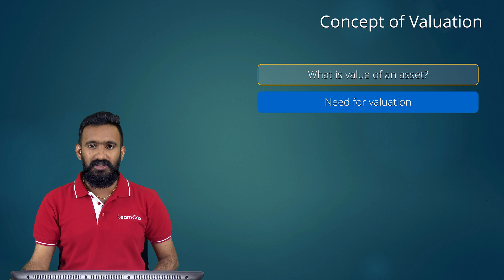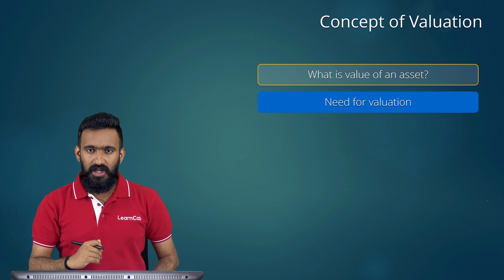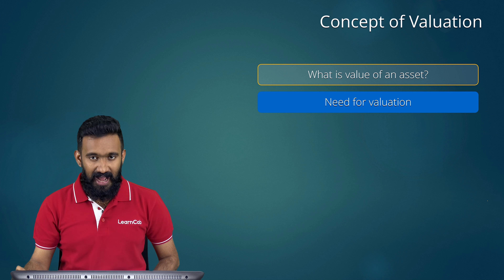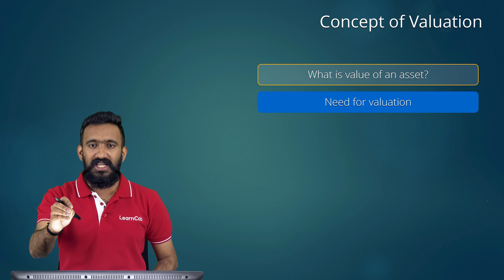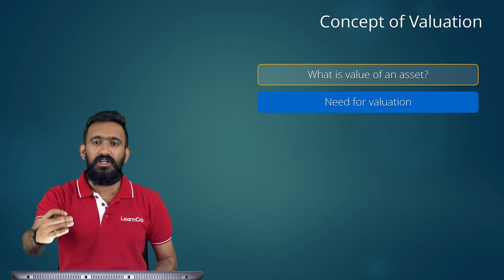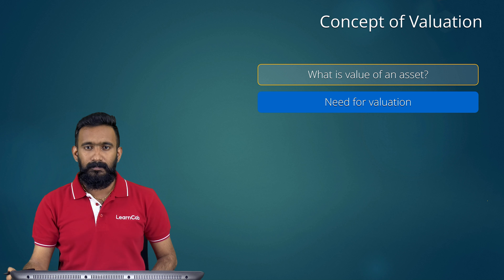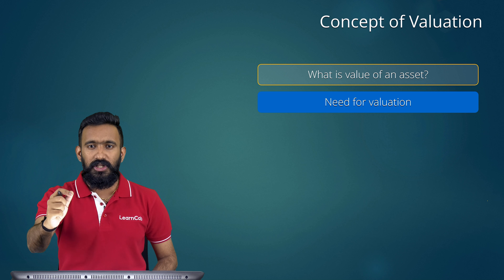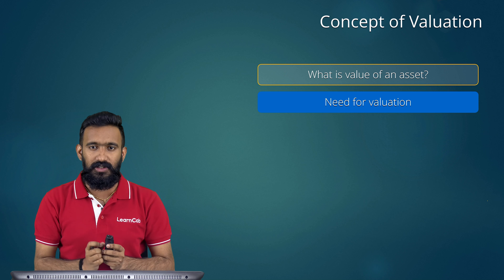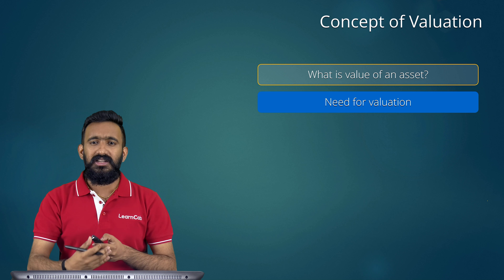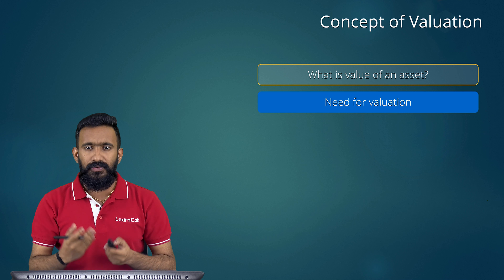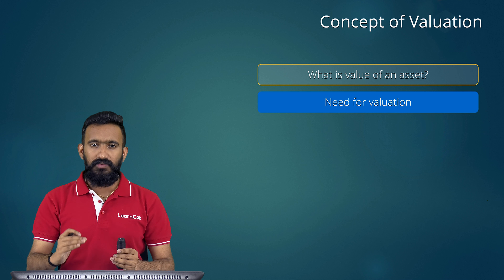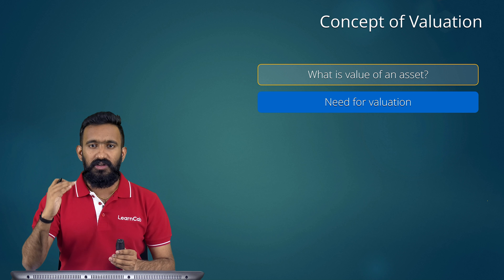Why do we need valuation? Because as an investor, or as a person who is going to buy a particular asset, what is the objective that we would have? We always need to purchase an asset which is actually lower priced in the market. So there must be something called an actual value that somebody is ready to pay for a particular asset — and that is what you, as an investor, would be ready to pay for it.